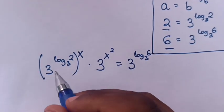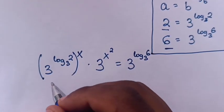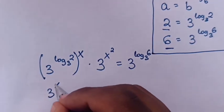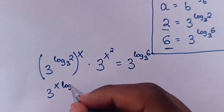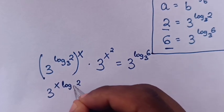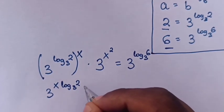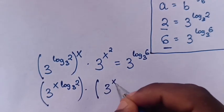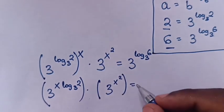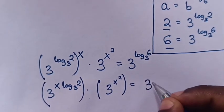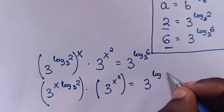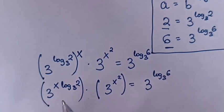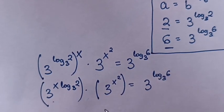In the next step, we will multiply these powers. It will be 3 power x log of 2 base 3, times 3 power of x squared, is equals to 3 log of 6 base 3. Now, to multiply same base but different powers.